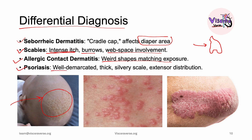Psoriasis is another differential — it presents as well-demarcated, thick, silvery-scaled plaques on extensor surfaces. An important distinction: thickness in atopic dermatitis presents as lichenification from scratching, whereas in psoriasis it presents as silvery plaques.